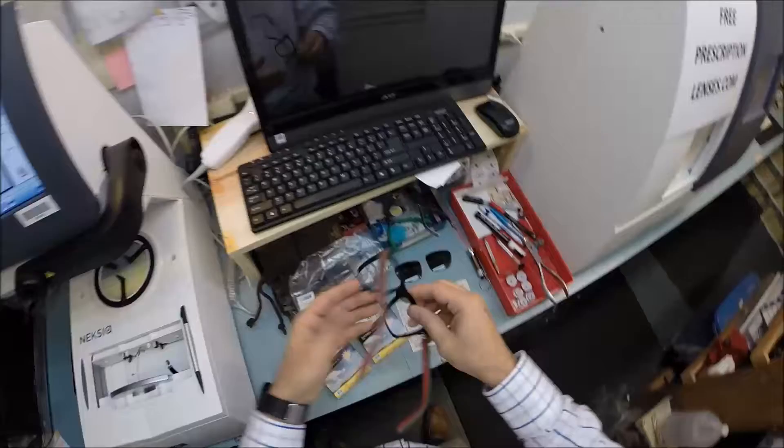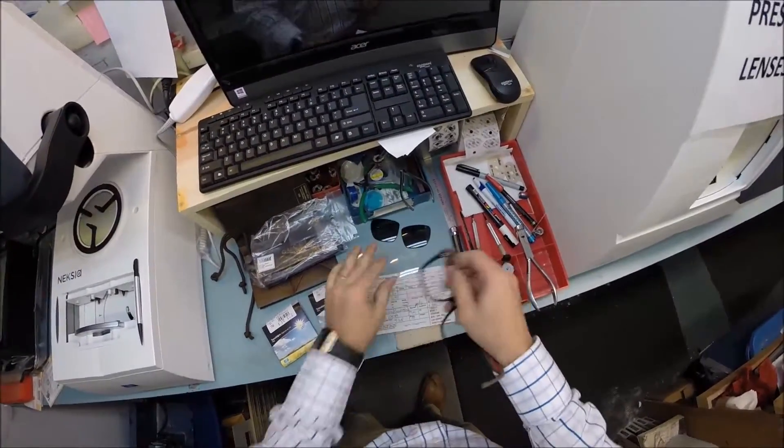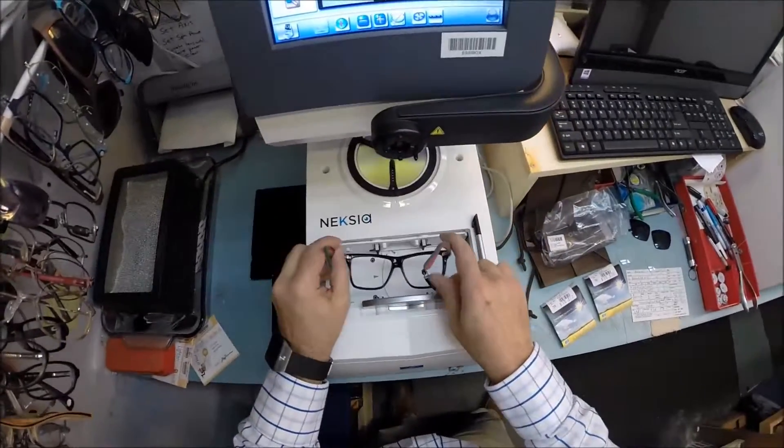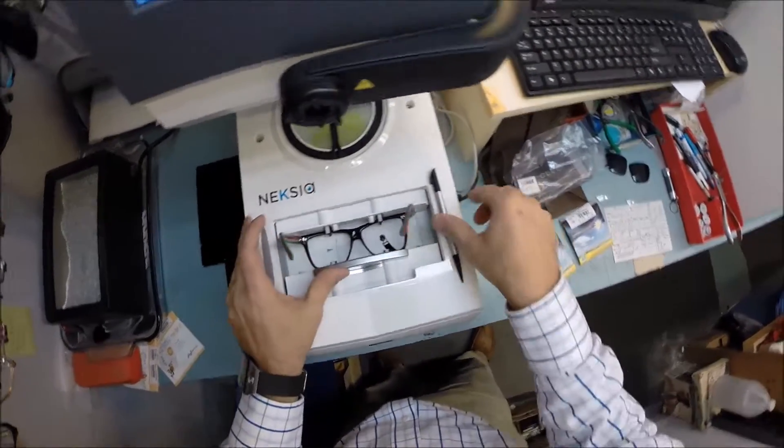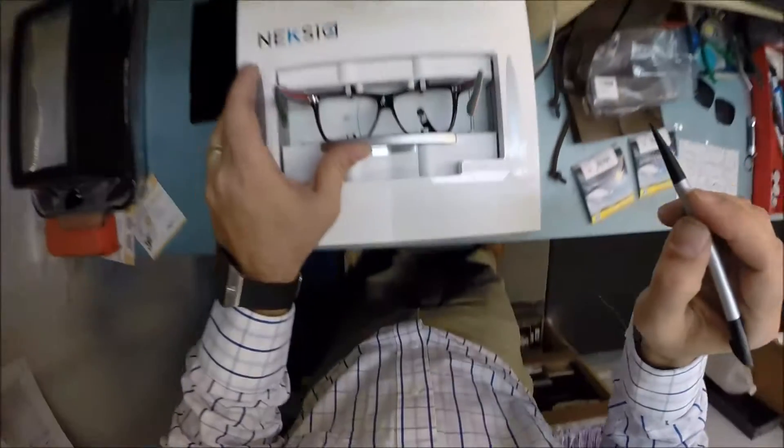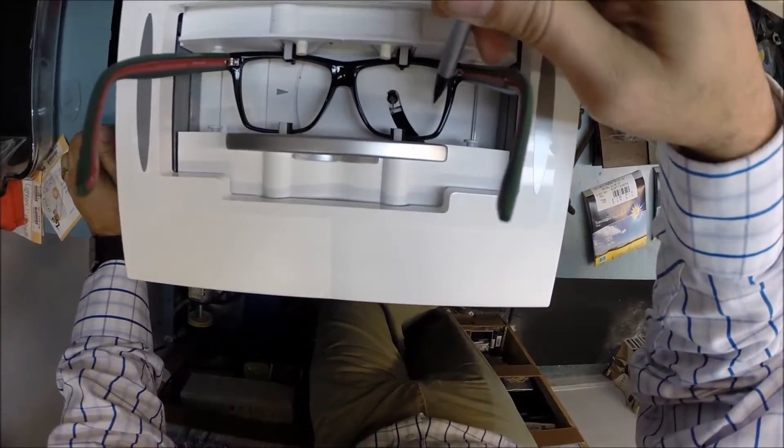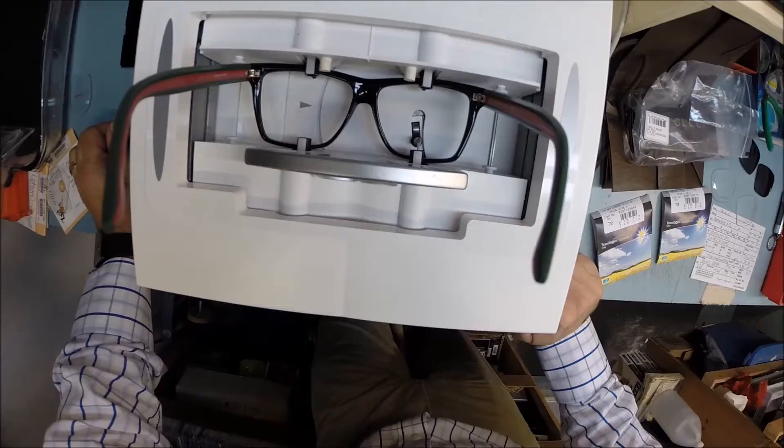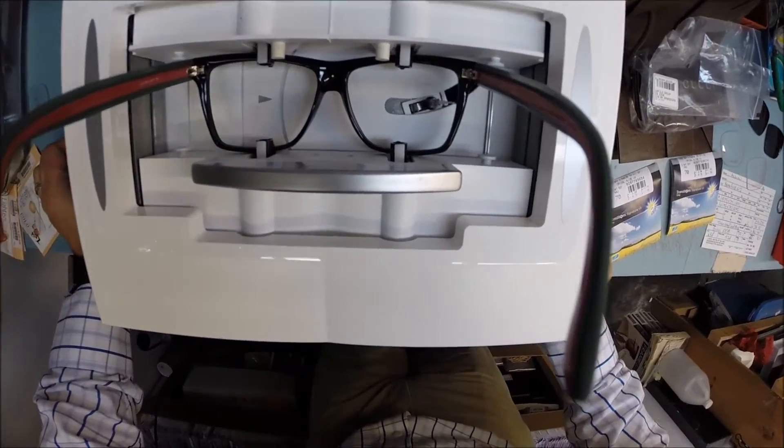I'm going to pop out your original demo lenses and put your Italian frame into my French edger and hopefully they'll get along. I'm going to wake this up and hit trace. So the stylus is going to come up and trace the shape of the right side of the frame before moving over and tracing the left.